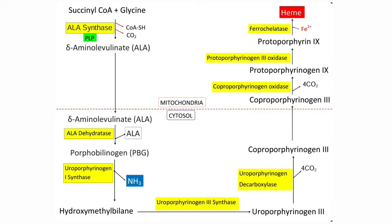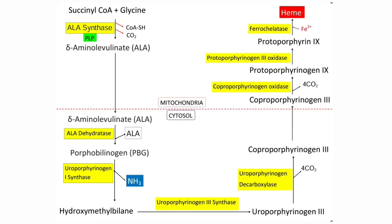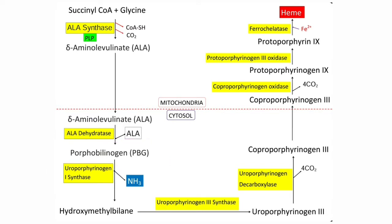The next reaction is the formation of porphobilinogen, which is formed from ALA in the cytosol. The ALA formed in the mitochondria diffuses into the cytosol. In this step, two molecules of ALA (delta-aminolevulinic acid) condense to form porphobilinogen. Porphobilinogen is a monopyrrole. This condensation involves the removal of two molecules of water. ALA dehydratase catalyzes this reaction and requires zinc for its activity. ALA dehydratase is inhibited by the heavy metal lead; that is why elevation of ALA levels and anemia are observed in lead poisoning.